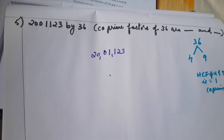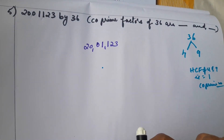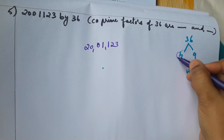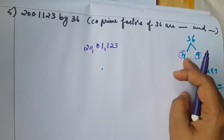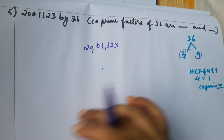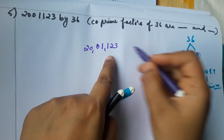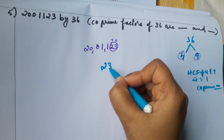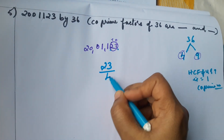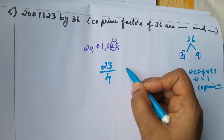According to the divisibility rule of 4: the last 2 digits — ones and tens place — should be divisible by 4. The last 2 digits of 20,11,123 are 23. Is 23 divisible by 4? No — we get a decimal number. So the answer for divisibility by 4 is No.